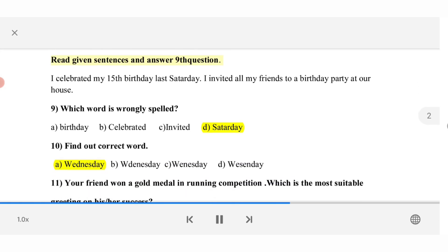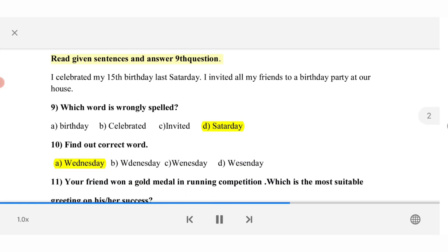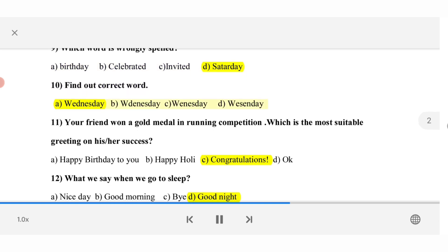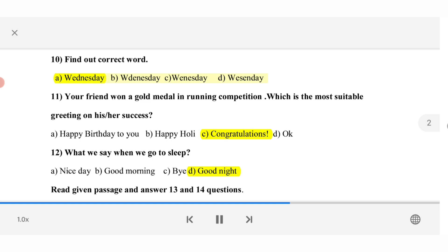Read given sentences and answer 9th question. I celebrated my 15th birthday last Saturday. I invited all my friends to a birthday party at our house. 9. Which word is wrongly spelled? A. Birthday. B. Celebrated. C. Invited. D. Saturday. 10. Find out correct word. A. Wednesday. B. Dinsday. C. Wensday. D. Westenday.